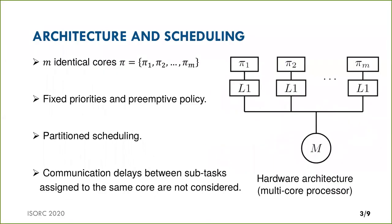The task model is executed on a multi-core processor with m identical cores. We use fixed-priority preemptive scheduling with a partitioned policy where each subtask is assigned statically to the same core. We assume the mapping between subtasks and cores is given.